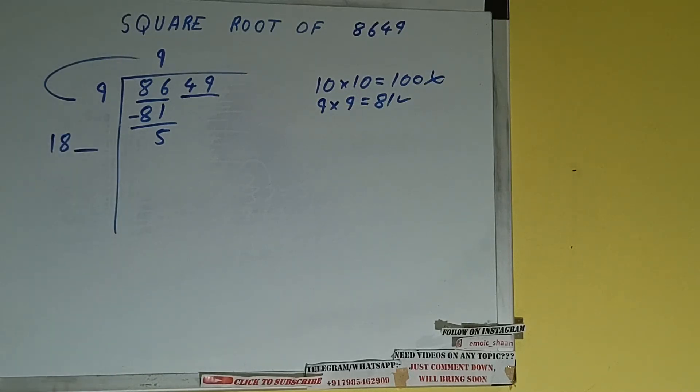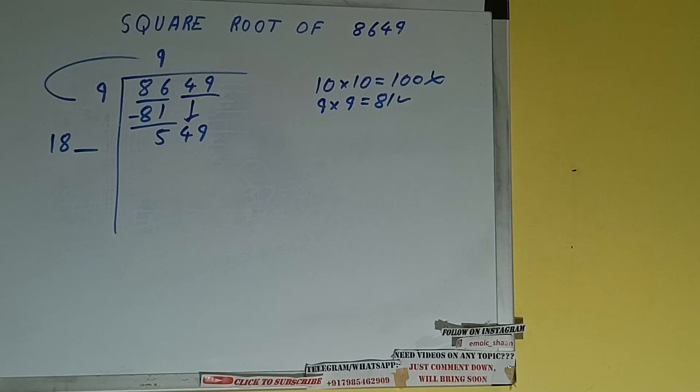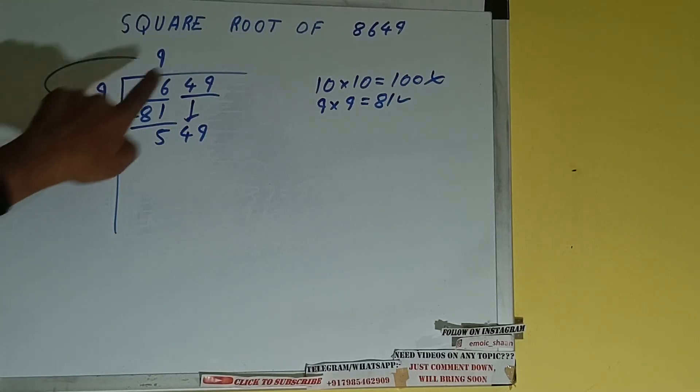Keep it as extra and this number we need to make it big so that we can divide. So bring the next pair down and it will be 549. Now whatever number we write here we have to write here also.